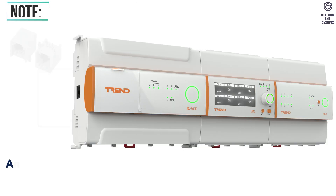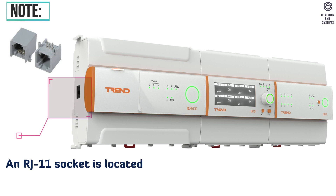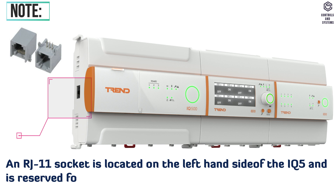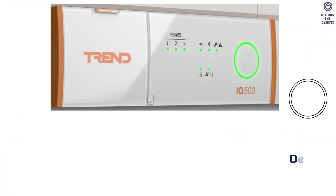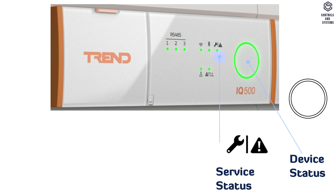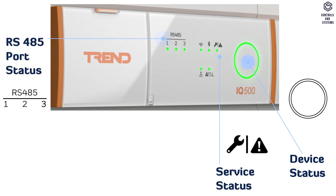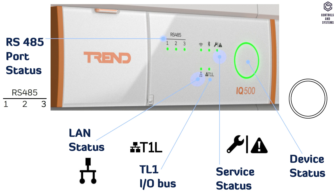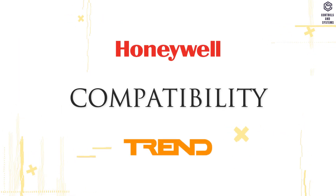Note: an RJ11 socket is located on the left-hand side of the IQ5 and is reserved for future use. Indicators: this is the device status indicator, this is the service status indicator, this is the RS-485 port status indicator, this is the LAN status indicator, and this is the TL1 input-output bus status indicator.